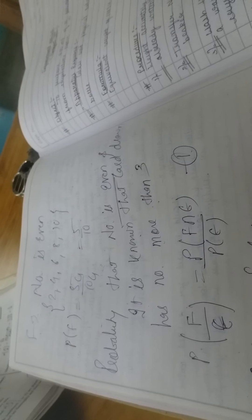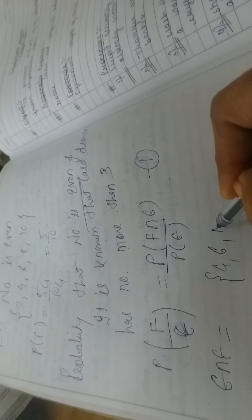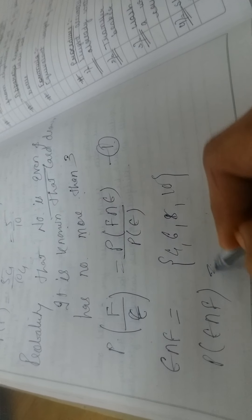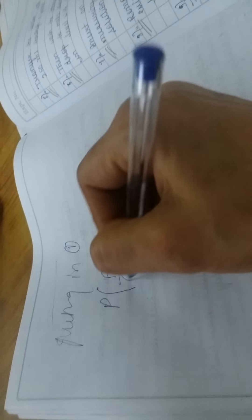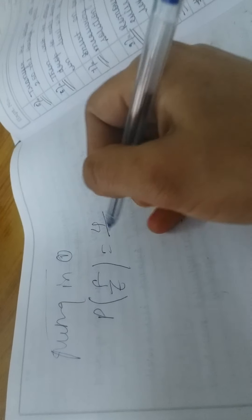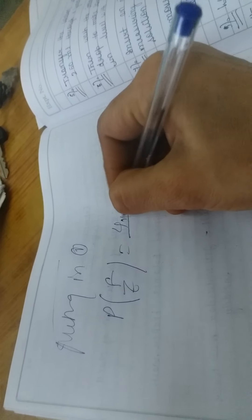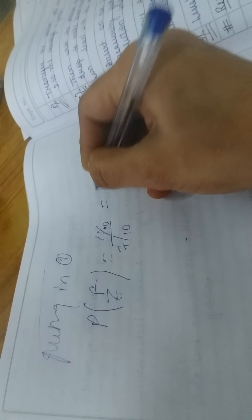F intersection E: hand, card has number more than 3. So what will you have? E intersection F will be? 6, 8, no, 4 will come. 4, 6, 8 and 10. So what will you have P of E intersection F? It is 4C1 upon 10C1 that is 4 by 10. Put it in the formula. PF by E equals to 4 by 10 upon 7 by 10. So it is 4 by 7.